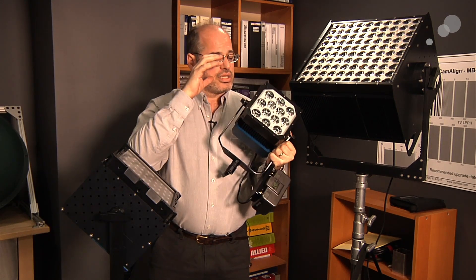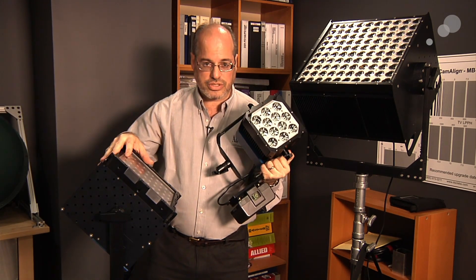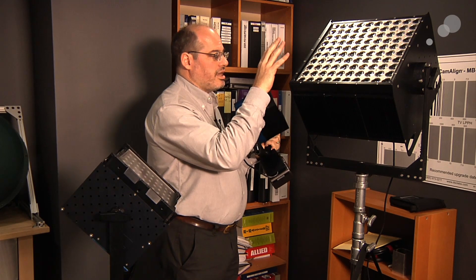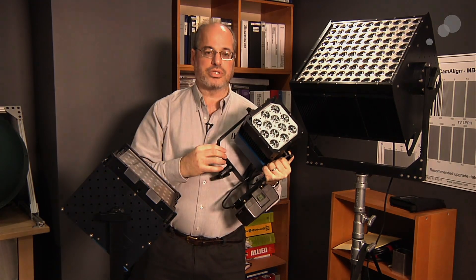This is the Nila Varsa. This is the Nila Boxer. And this is the Nila SL. These are all daylight units, but they're also available in tungsten from Abel Cine.